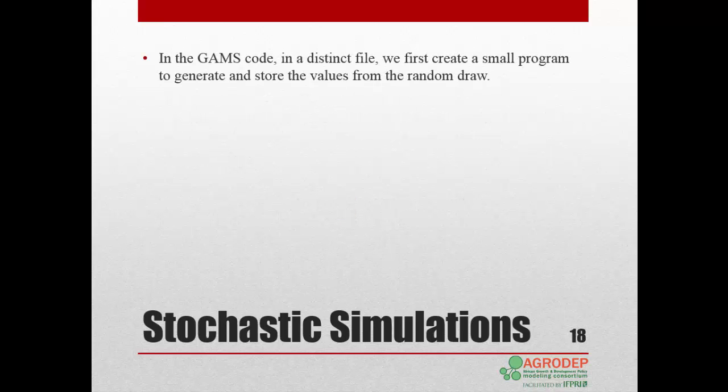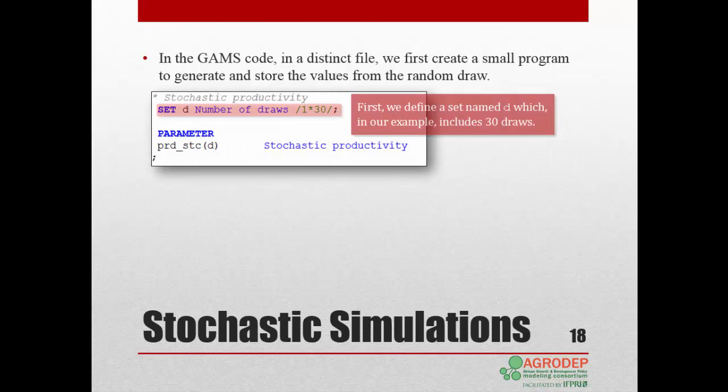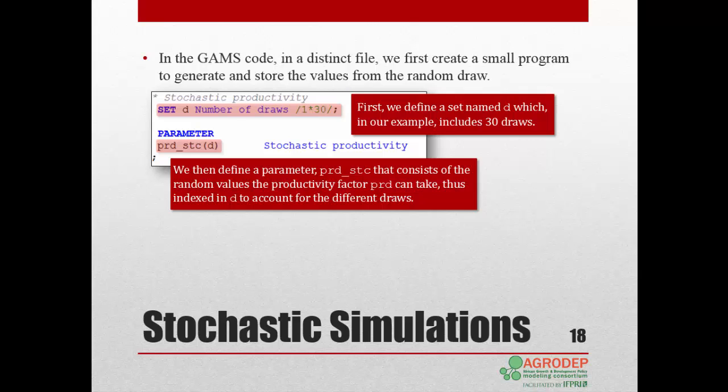We proceed in two steps. First, in a separate GAMS file in GAMS IDE, which we call draw.gms, we create a small program to generate and store the values from the random draw. So we define a set D, which includes the number of draws, 30 in our example. We then declare a parameter prd_stc, which stands for Productivity Stochastic. It is indexed in D and will store the random values of the productivity factor prd over the 30 draws.